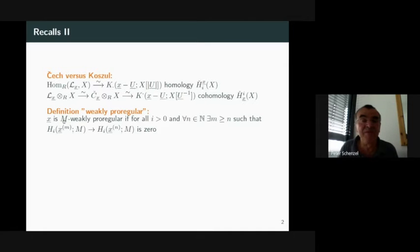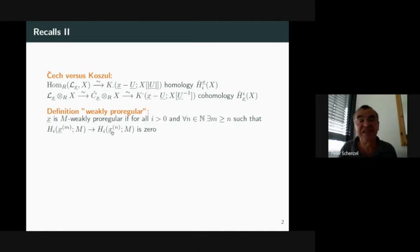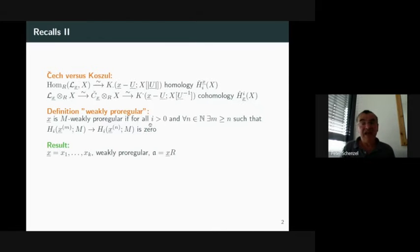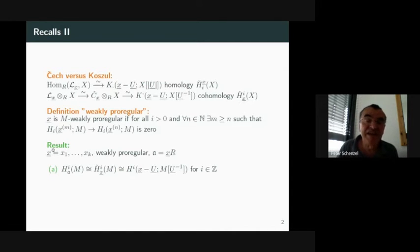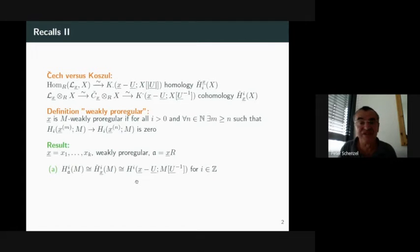For this, I used the notion of M weakly pro-regular sequence. If the natural map between the Koszul complexes of the system of elements generated by the powers of M to the system generated by the powers of N is zero — for each N there is an M with this property — I call X weakly pro-regular, or in fact R-weakly pro-regular, and call A the ideal generated by it. If I have a weakly pro-regular sequence, this Čech cohomology, expressible as Koszul cohomology, is isomorphic to the local cohomology with respect to the ideal A.